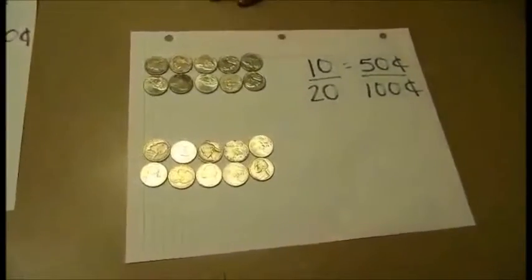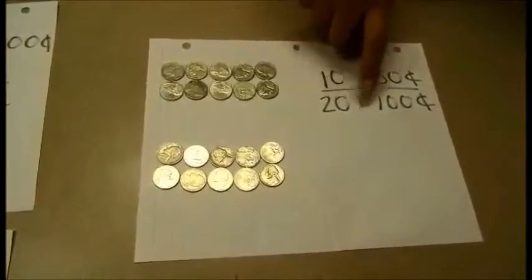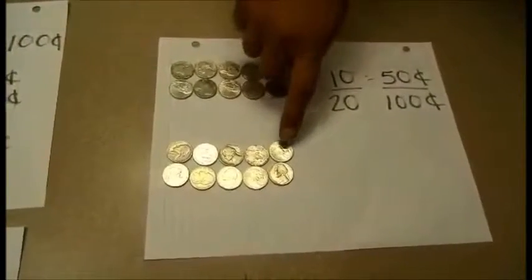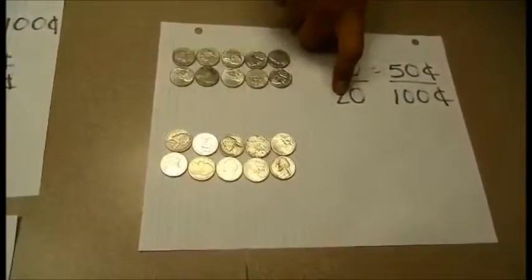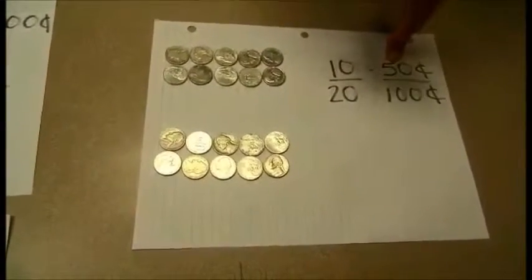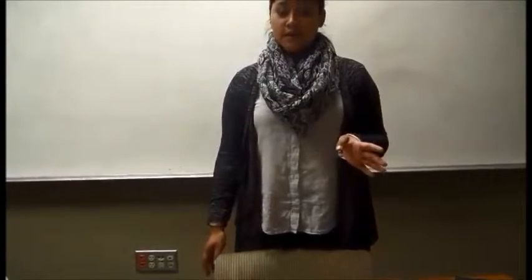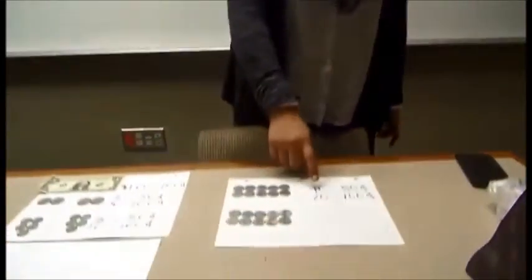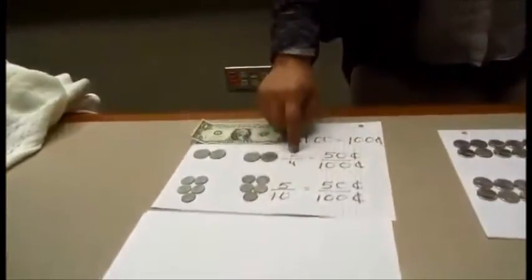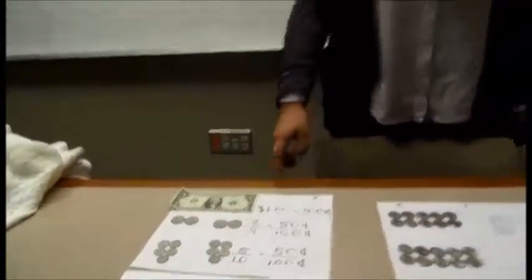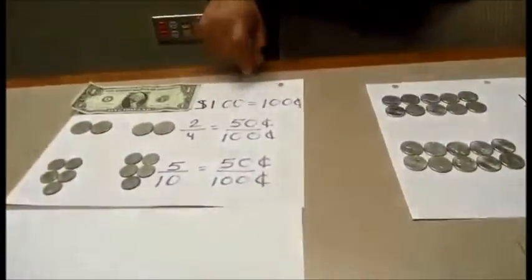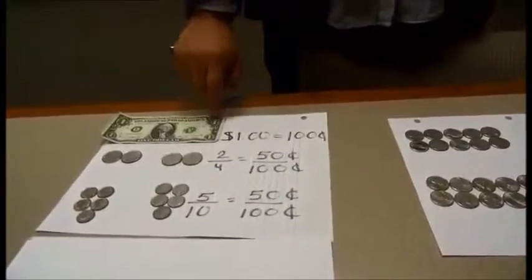What if we only have nickels? We will need 20 nickels to make up the 100 cents. That means he will get 10 out of the 20 nickels, but it will still be the 50 cents. What we can conclude from these examples is that even though the number of coins we are using varies, the amount of money will be the same. Because when he gets half, either it's 10 out of the 20, 5 out of the 10, or 2 out of the 4, he will still be getting the 50 cents, which is half of the 100 cents, which is half of the whole dollar.